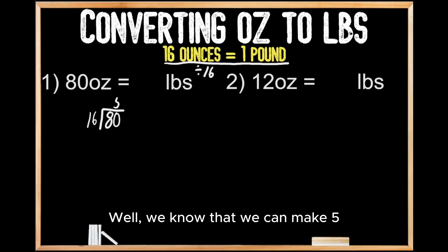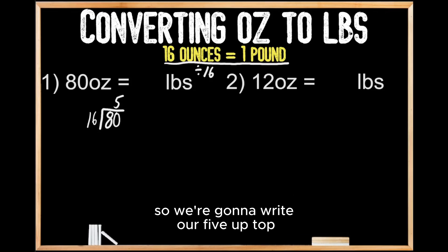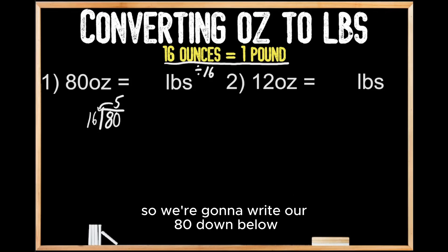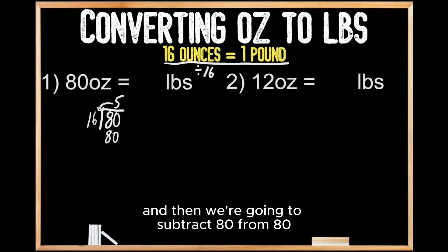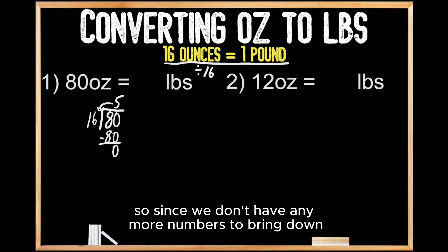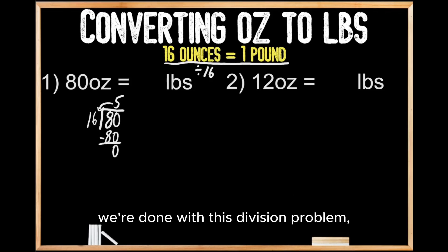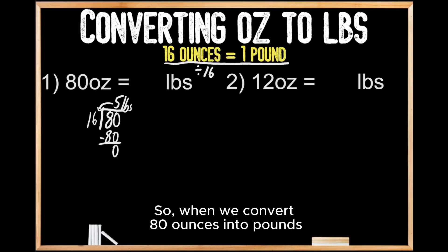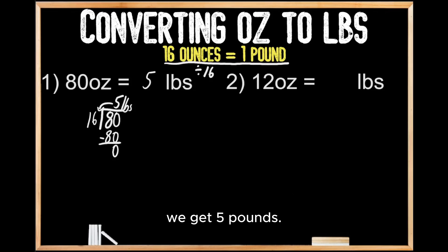We know that we can make five equal groups of 16 out of 80, so we write our 5 up top, and then we multiply 5 times 16, which gives us 80. We write our 80 down below, and then we subtract 80 from 80, which leaves us with 0. Since we don't have any more numbers to bring down, we're done. Our quotient is 5, or 5 pounds. So when we convert 80 ounces into pounds, we get 5 pounds.